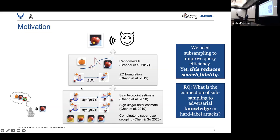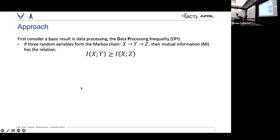We began our investigation by considering a basic result in data processing called the data processing inequality, or DPI. It states that if there are three random variables, say X, Y, and Z, and they form a Markov chain,